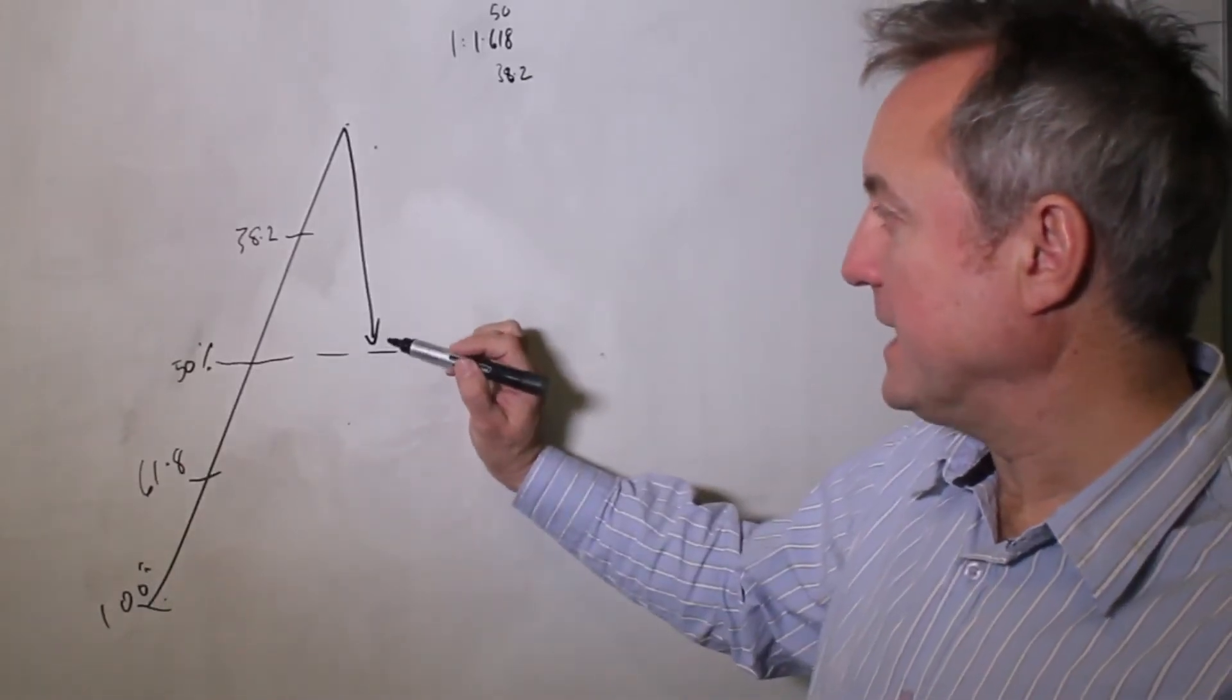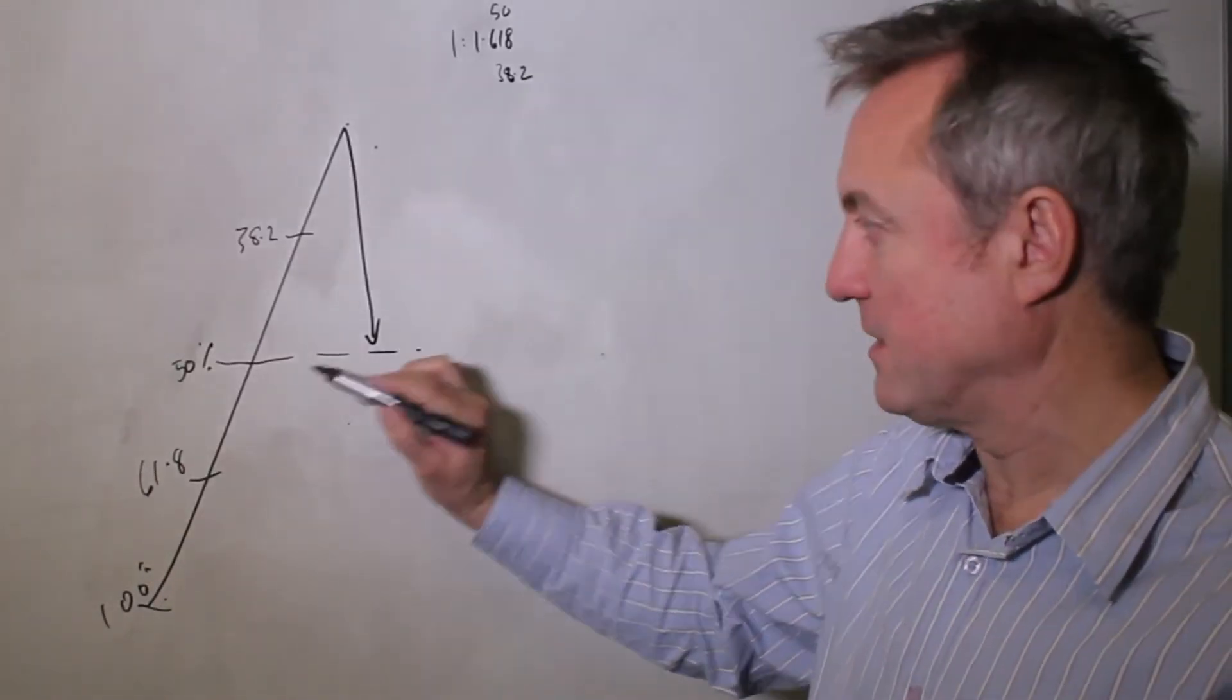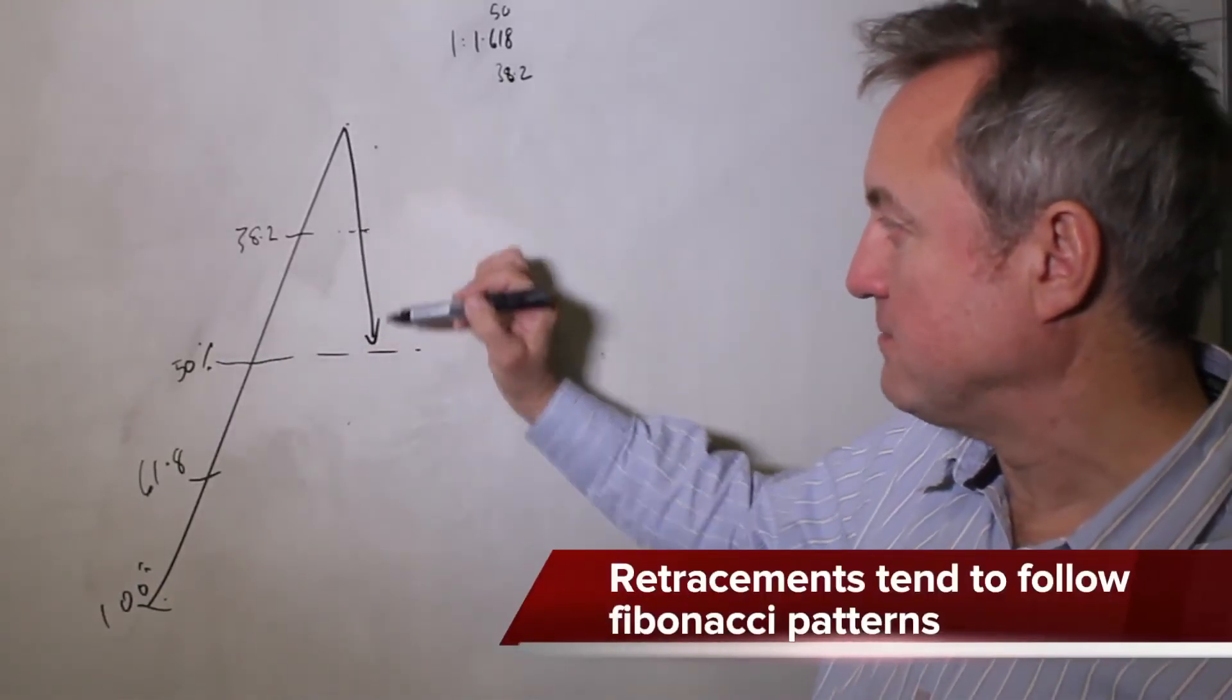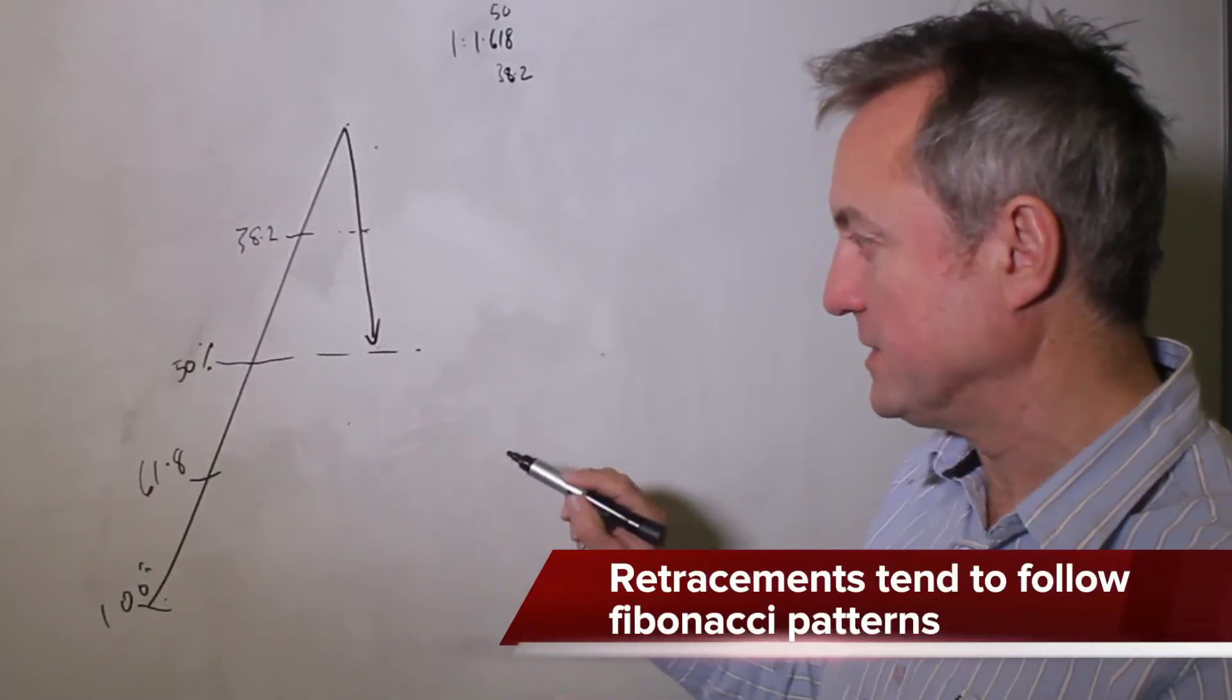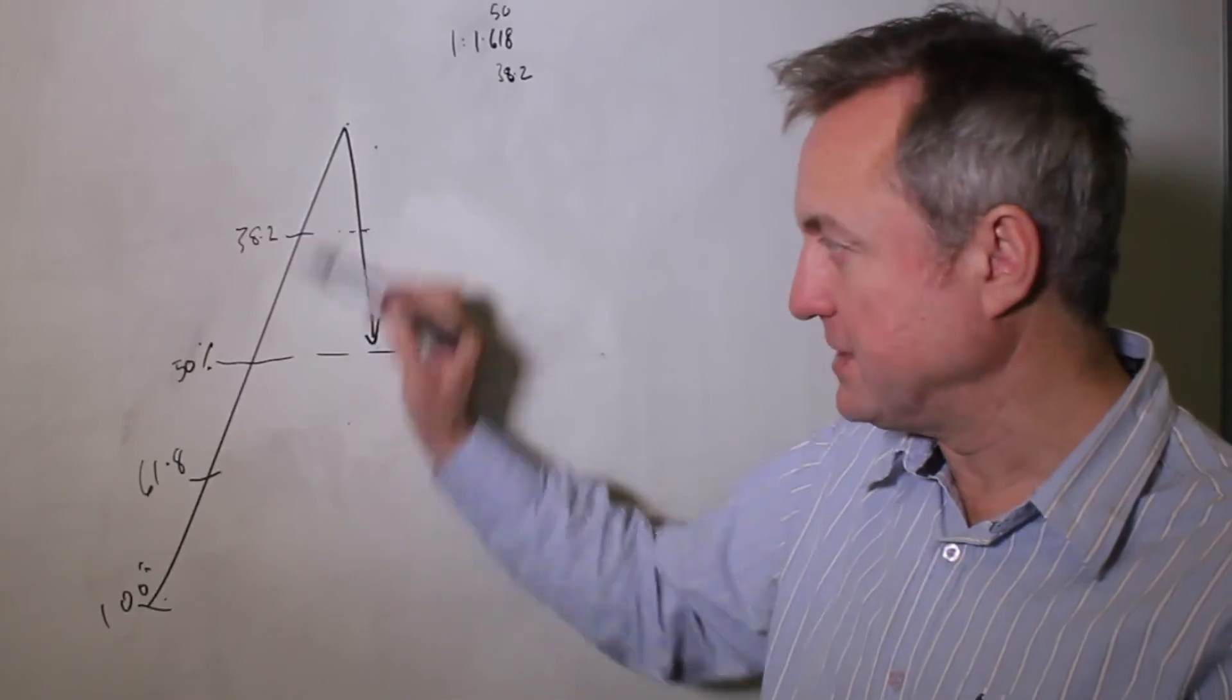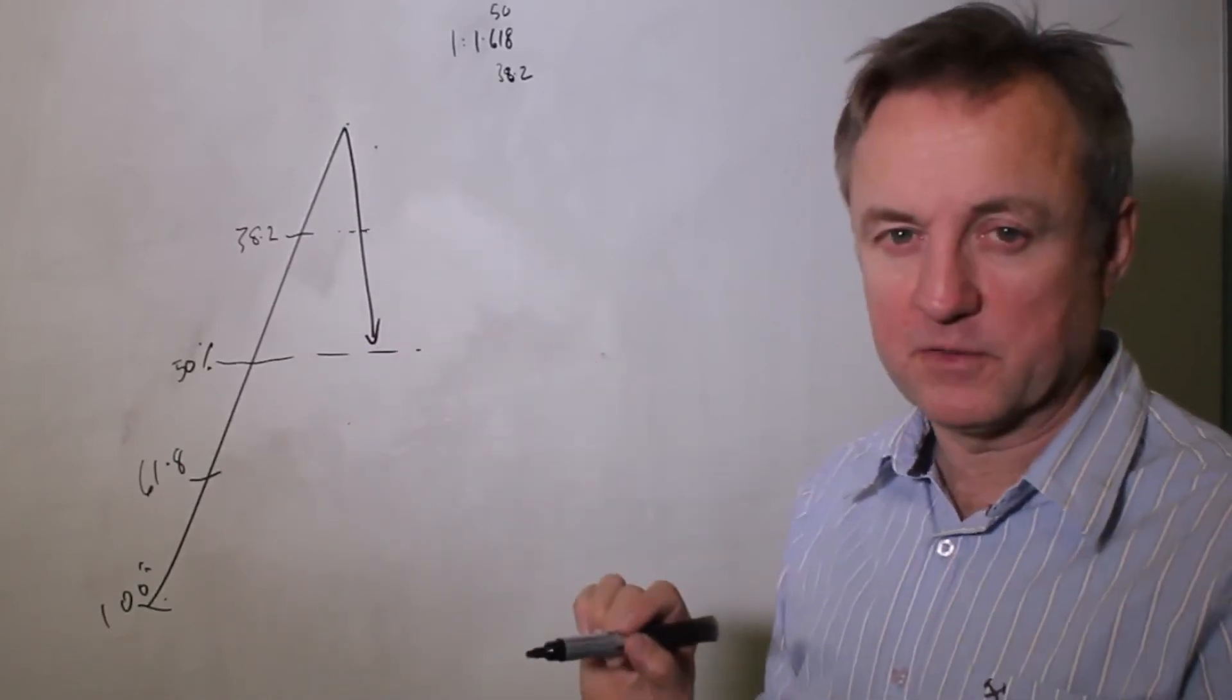You will find in the absence of any other indicators by the prior highs and so on, these levels will act as support levels on retracement. They're very significant turning points, and in the absence of anything else, Fibonacci ratios of the preceding trend can be very useful levels to trade around.